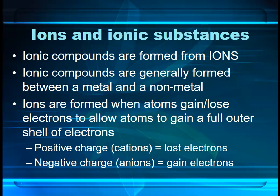Atoms form ions when they gain or lose electrons to get a full outer shell of electrons. Usually metals lose electrons and form positively charged ions known as cations, and non-metals gain electrons to form negatively charged anions. This is quite important — when trying to identify whether a compound is ionic, ask yourself what types of atoms it's made of. If it's made of a metal and a non-metal, the chances are it's an ionic compound.